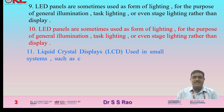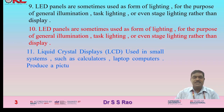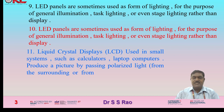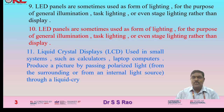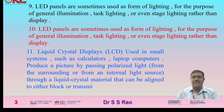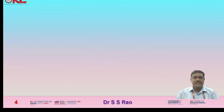LCDs produce a picture by passing polarized light from the surrounding environment or from an internal light source through liquid crystal materials that can be aligned to either block or transmit the light.